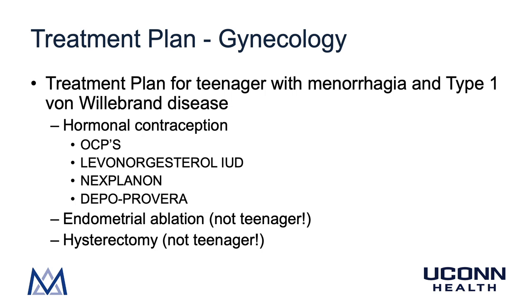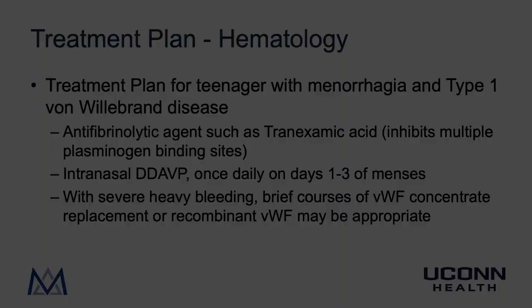For patients who are after their childbearing years, endometrial ablation and hysterectomy are options, but for our adolescent patient LB these would not be appropriate right now. We would really want to stick with offering her different forms of hormonal contraception, as long as she had no contraindications to these medications.